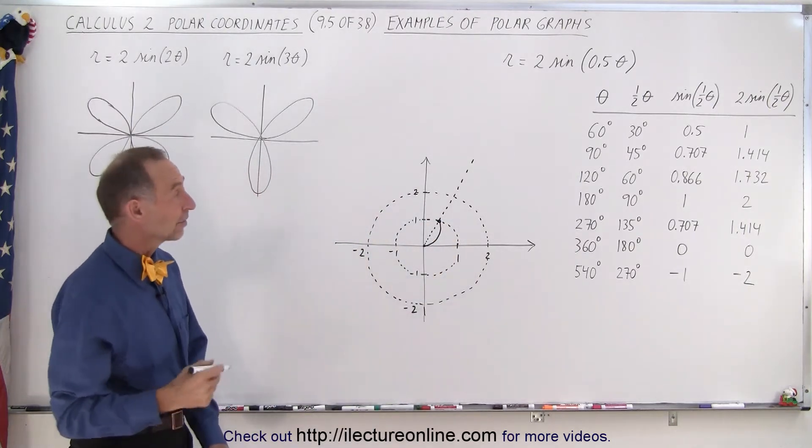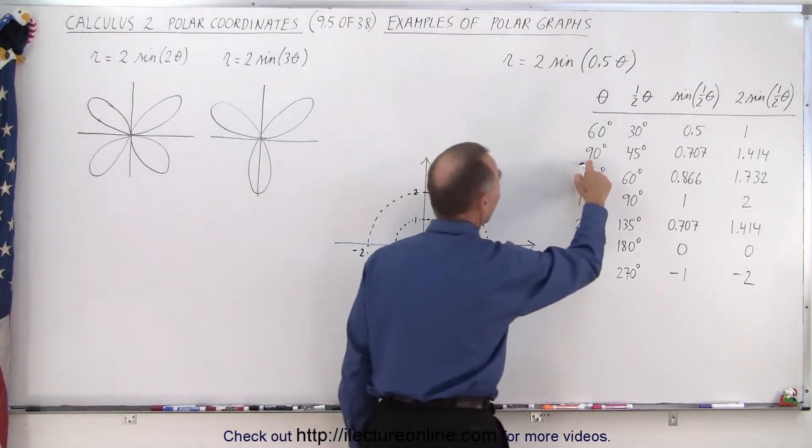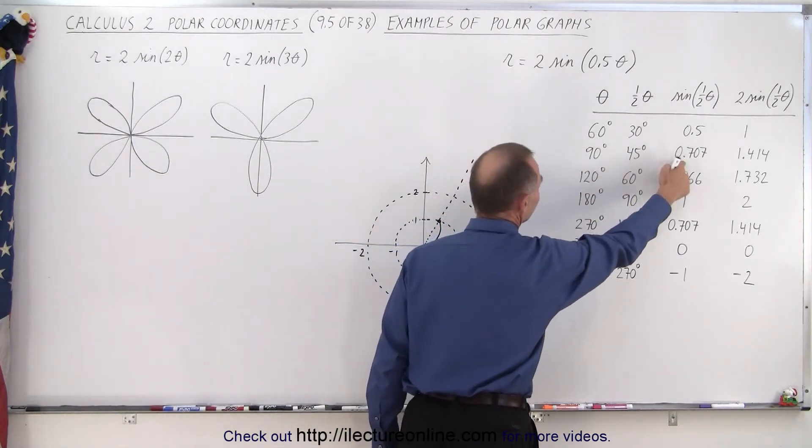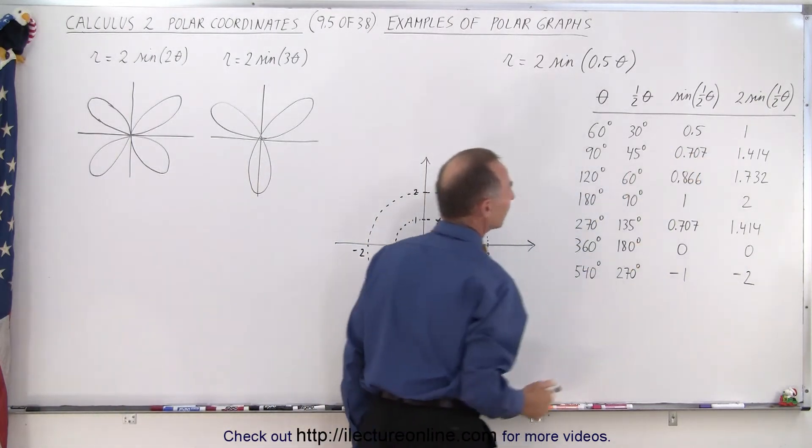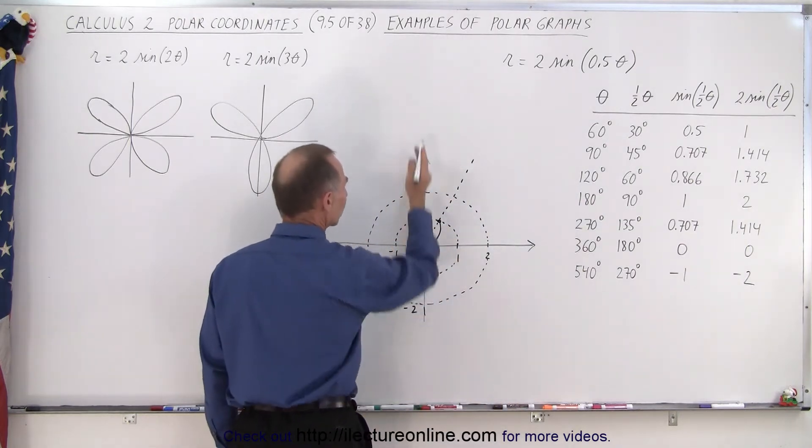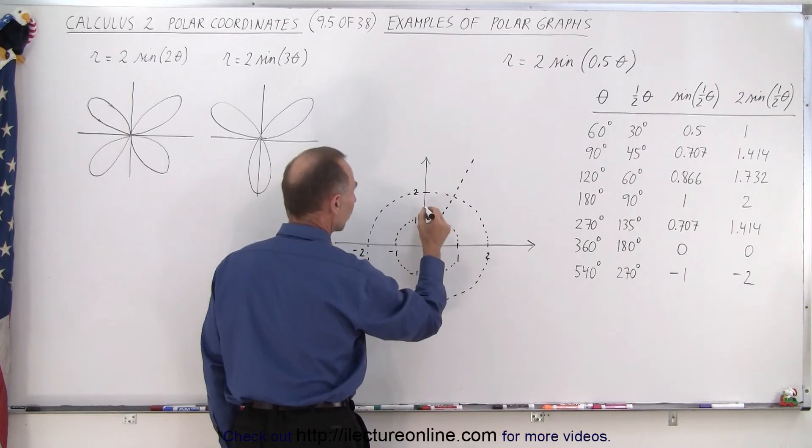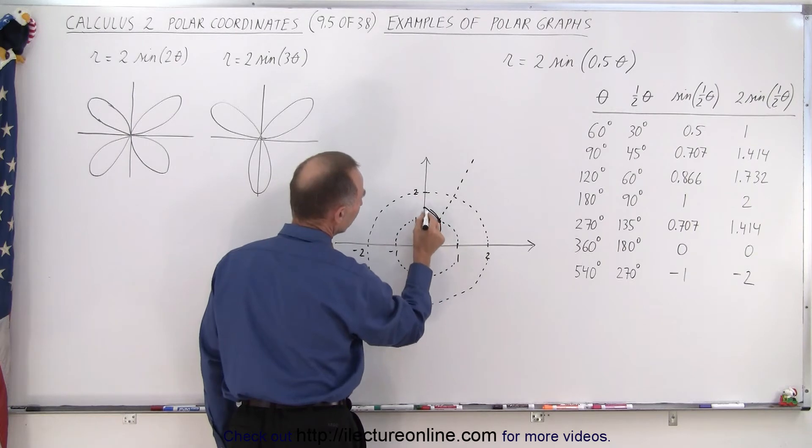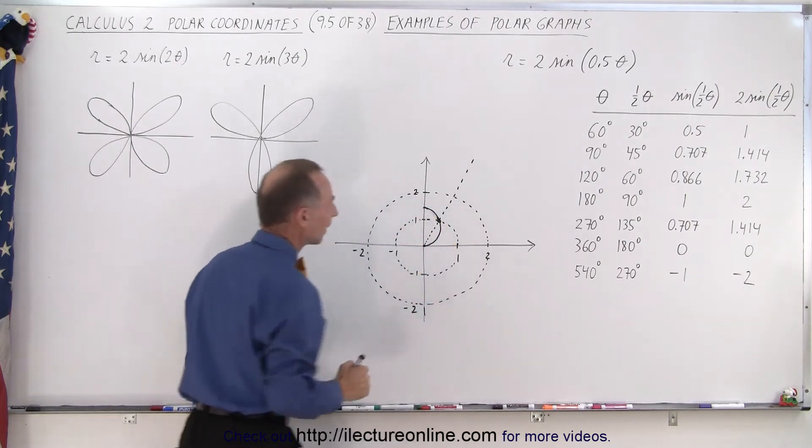Now we take the second angle at 90 degrees. Half of that is 45 degrees, the sine of 45 is 0.707, double that you get 1.414. So when the angle is 90 degrees, that's straight up, the distance is 1.414 which is about here. Then you would connect this line like that. I'm making a bit of a mess of it but okay, that's good enough.